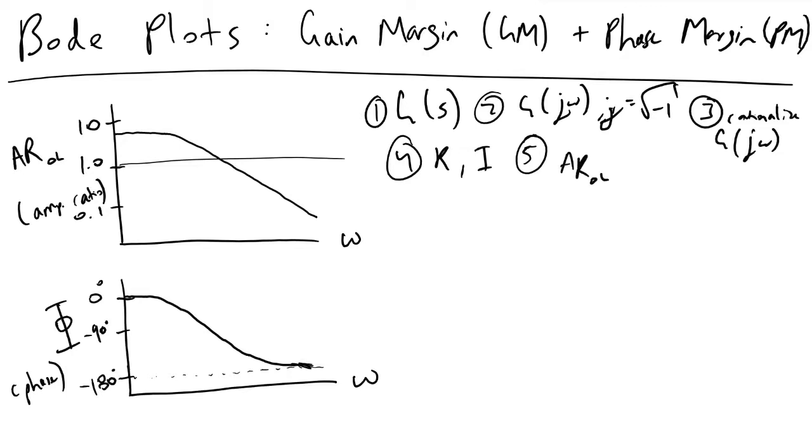So we'll find the amplitude ratio AR of the open loop response via the following. It will be equivalent to the square root of r squared plus i squared.